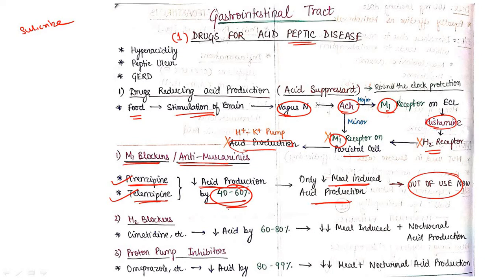The second is your H2 blocker. It includes cimetidine, ranitidine and similar drugs. It will decrease acid production by 60 to 80 percent and will decrease both meal-induced as well as nocturnal acid production.